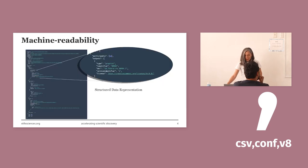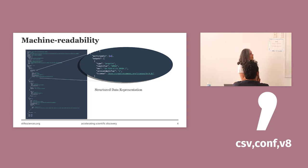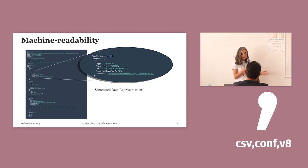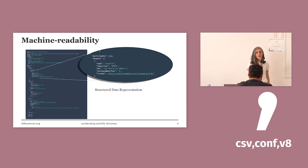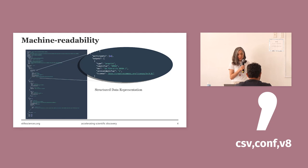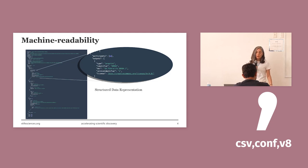Let's start with machine-readability. This is an example DocMap — I know it's very hard to read, but I wanted to share one whole real-life example. As you see, it is a structured data representation showing complex relationships and metadata in a standard format, which makes it machine-readable. That means computers can easily understand and process this data without human help. So why is it important when it is machine-readable? It helps automate tasks, speed up the process, and reduce human errors.